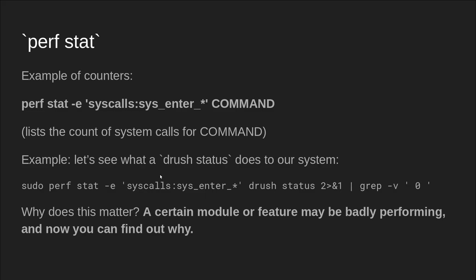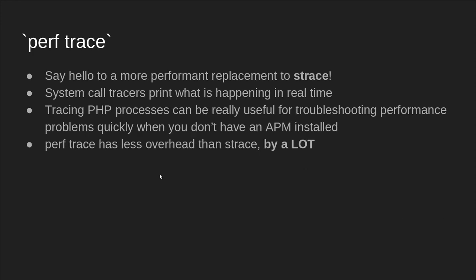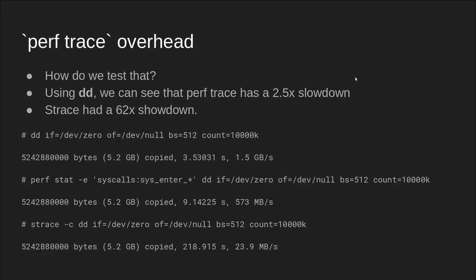So why does this stuff matter? A certain module or a feature may be badly performing, but you might not know why. If you wrap it in this tool, you get some better clues. So perf trace — this is really cool. At the last talk I did about Linux, I was talking about strace. This is a more performant replacement — a system call tracer. You can attach it to a process, or the whole system, and it will print everything that's happening in real time. Tracing PHP processes is a big thing I used to do when I was in operations at Acquia, to troubleshoot performance problems on customer sites when you don't have an APM installed.